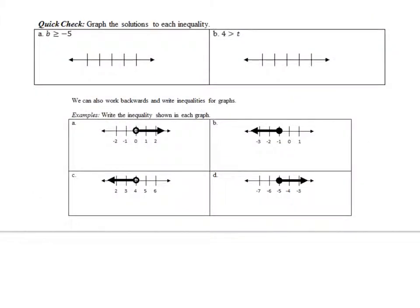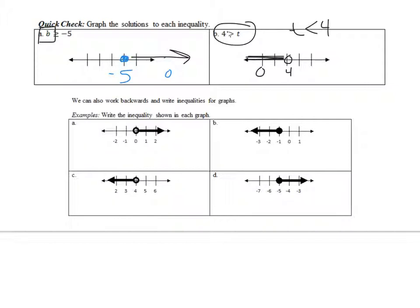A few more examples. Negative 5 gets a closed dot because it's greater than or equal to — it has the equal to symbol. Zero is over to the right. Numbers greater than negative 5 go to the right, and 0 is greater than negative 5. For letter B, put an open dot at 4, with 0 to the left. Remember: 4 is greater than T, meaning T is less than 4, so numbers less than 4 go to the left — put an arrow.